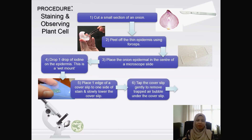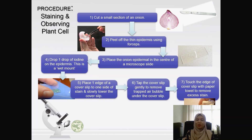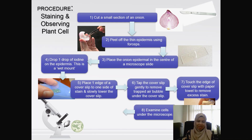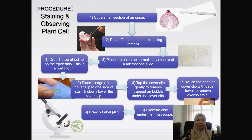Tap the cover slip gently to remove trapped air bubbles. If there is excess staining reagent, touch the edge of the cover slip with a paper towel to remove the excess stain. You can now examine the slide under the microscope, observe, draw, and label the image that you've seen.